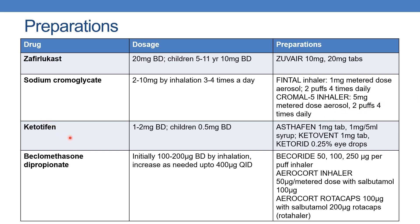Next is ketotifen. The dose is 1 to 2 mg twice daily, and for children 0.5 mg twice daily. The preparations are Aztafen 1 mg tablet and 1 mg per 5 ml syrup, and Keto 1 mg tablet, also available as 0.25% eye drops.